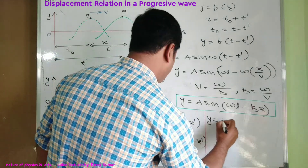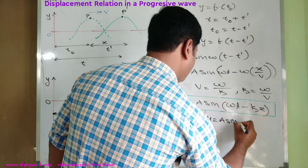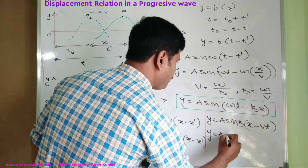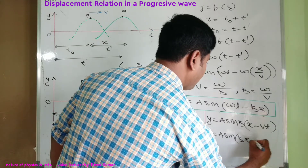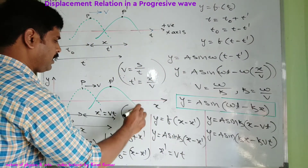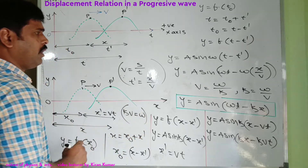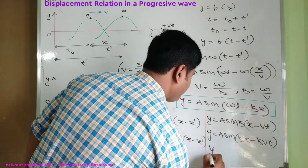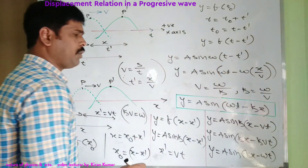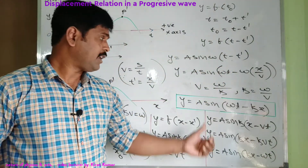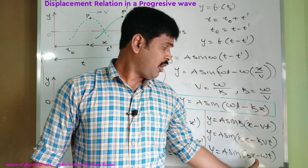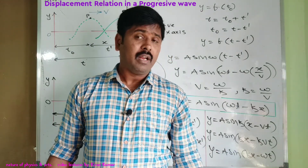Here x-dash equals vt, because velocity equals displacement by time. So y equals a sin(k(x − vt)). Expanding: y equals a sin(kx − kvt). Since kv equals omega, this gives y equals a sin(kx − ωt). We will mainly consider y equals a sin(ωt − kx) as the function of time, and y equals a sin(kx − ωt) as the function of displacement.